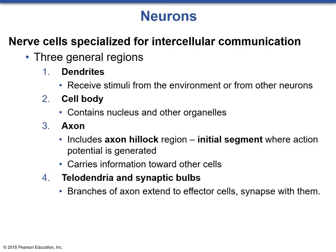The neuron is composed of dendrites, which receive stimuli from the environment or other neurons; the cell body (or soma), which contains the nucleus and other organelles including mitochondria and ribosomes; and the axon, which includes the axon hillock region — the initial segment where the action potential is generated as the process extends off the cell body. The axon carries information towards other cells and away from the main cell body, ending in the telodendria and synaptic bulbs where branches of the axon extend to effector cells and synapse with them.